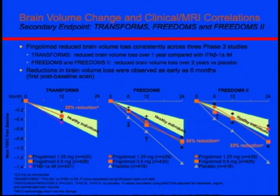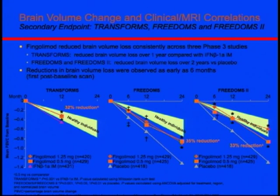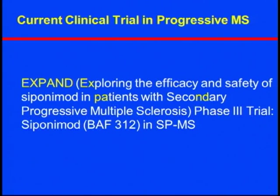Based on fingolimod's central and peripheral nervous system effects, brain volume preservation, and clinical efficacy, this provides a rationale for further clinical trials in progressive MS patients.